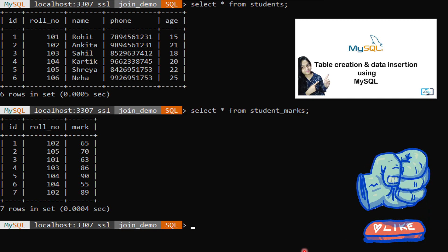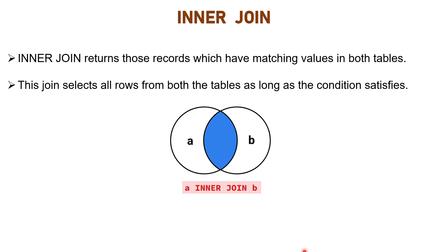Our first type of join is inner join. Inner join fetches all the rows where the common field value matches in both tables. The matching column on which inner join fetches data must be explicitly defined by us, and that field or column must be common in both tables.